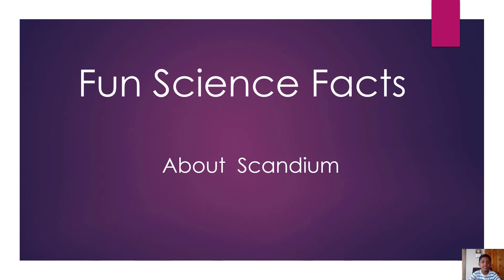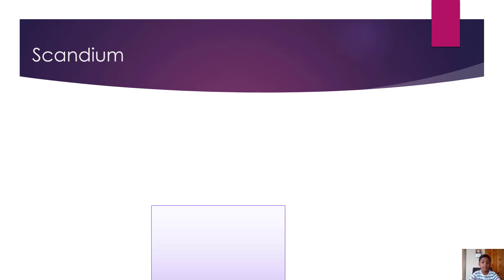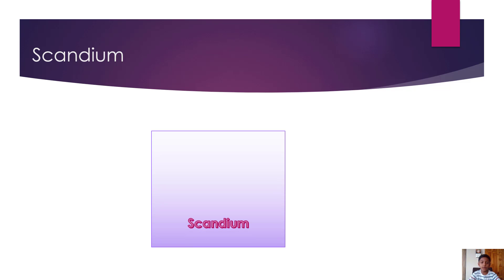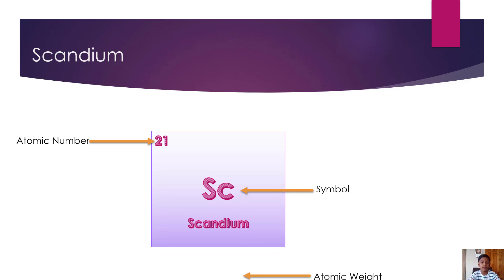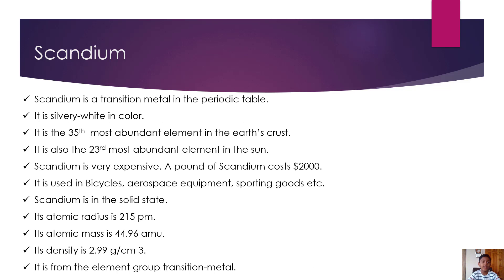Hello guys, today we are going to discuss some fun science facts about scandium. Sc is the symbol for it, with its atomic number as 21 and its atomic weight as 44.956. Scandium is a transition metal in the periodic table.